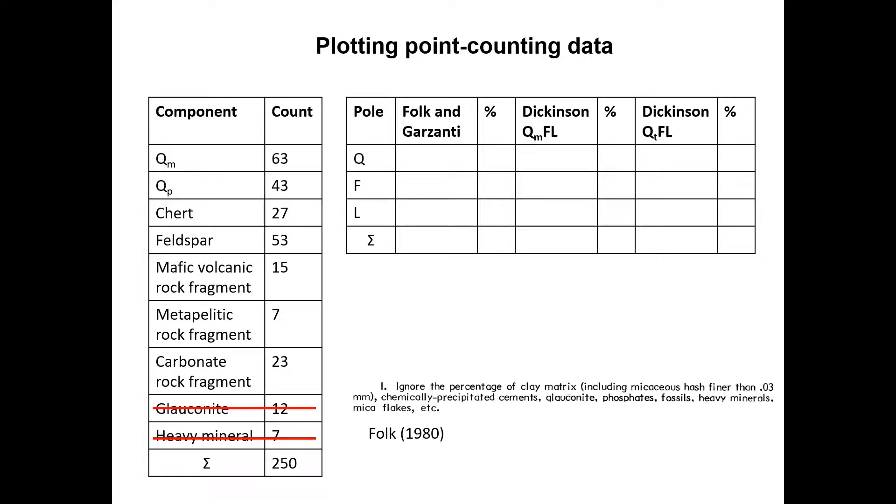In order to plot our data in the Folk or the Garzanti plot, we first need to ignore all those components that are not considered to be framework grains. For example, any kind of matrix or cement, intrabasinal grains such as glauconite or fossils, and any mineral phases that are susceptible to hydraulic sorting, such as mica or heavy minerals.